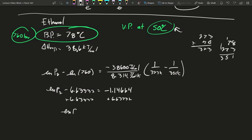Natural log of pressure 2 should equal 5.48668. E to both sides. My pressure 2, 241.45 Torr.